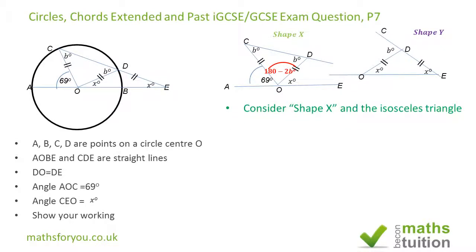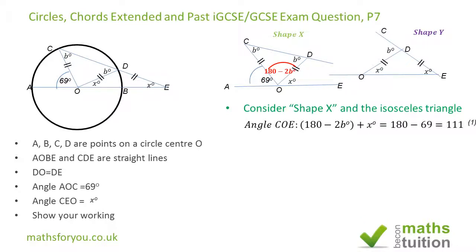Still on Shape X, angle COE is given by 180 minus 69 degrees. The same angle can also be expressed as 180 minus 2b plus x degrees, giving us our first equation.